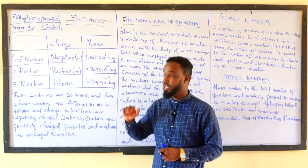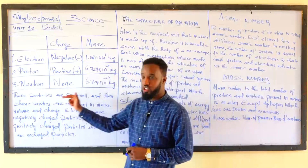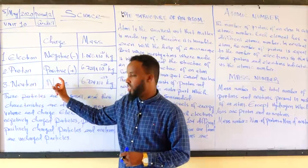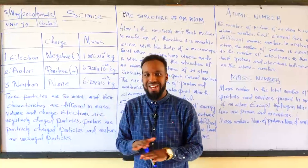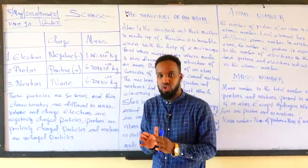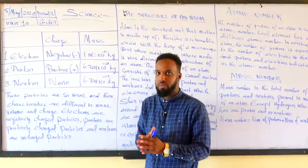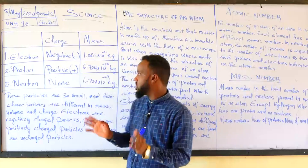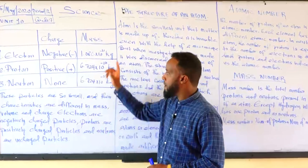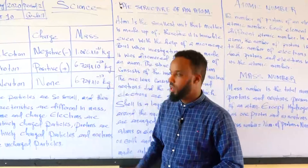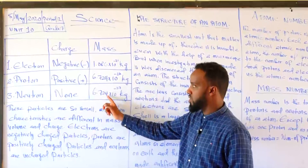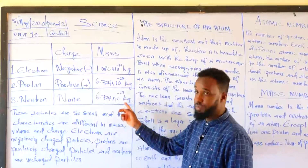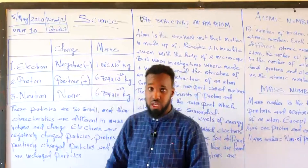The neutron has a mass as well. The neutron has no charge — it is neutral. The mass of the neutron is approximately 1.6724 times 10 to the power of minus 27 kg.